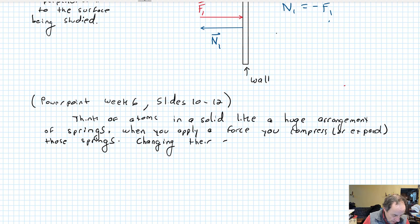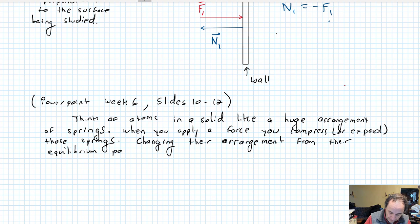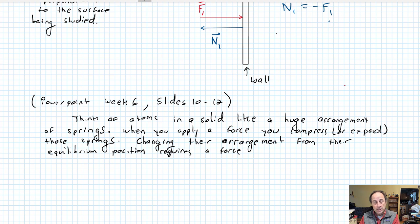On the microscopic level, the bonds between the atoms are stretching or compressing in response to an applied force. If you think of atoms in a solid like a huge arrangement of springs, displacing them from their equilibrium position requires a force, and once displaced they're unstable and will push back trying to return to their equilibrium position — just like moving a spring from its equilibrium position.